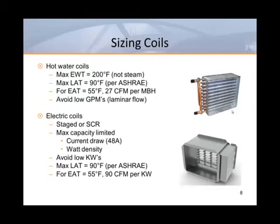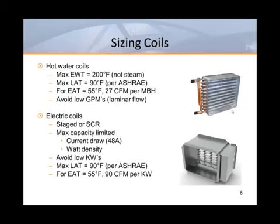So if we wanted a 75 degree room temperature, we should limit our discharge temperature to 90 degrees. If we assume 55 degree supply air, then we would likewise limit the temperature rise through our coil to 35 degrees. This means that we should have at least 27 CFM per MBH to limit our discharge temperature. In hot water coils, it's important to avoid low water flow. If water moves too slowly through a coil, it can go from a desired turbulent flow to a less efficient laminar flow. It's much better to move water more quickly through a single row coil than to move it too slowly through a multi-row coil.